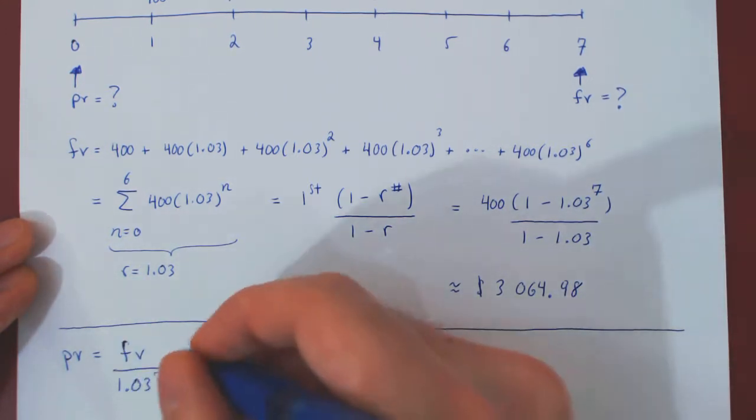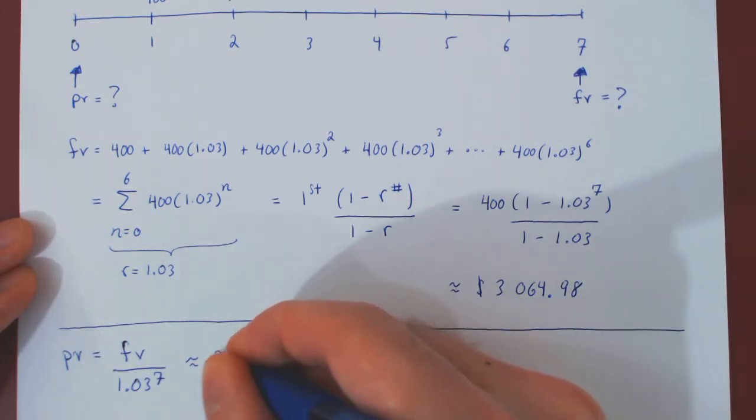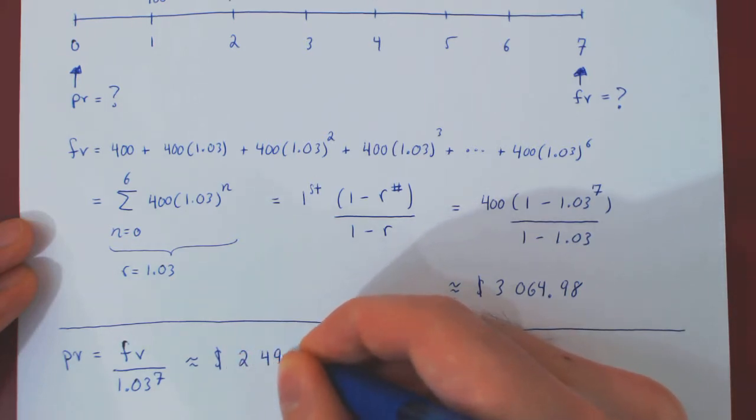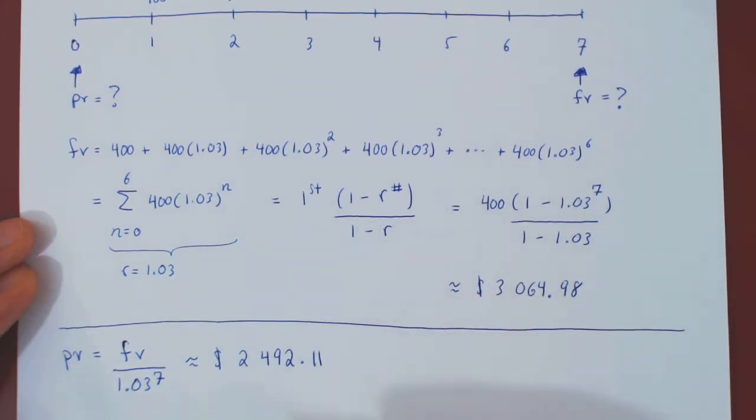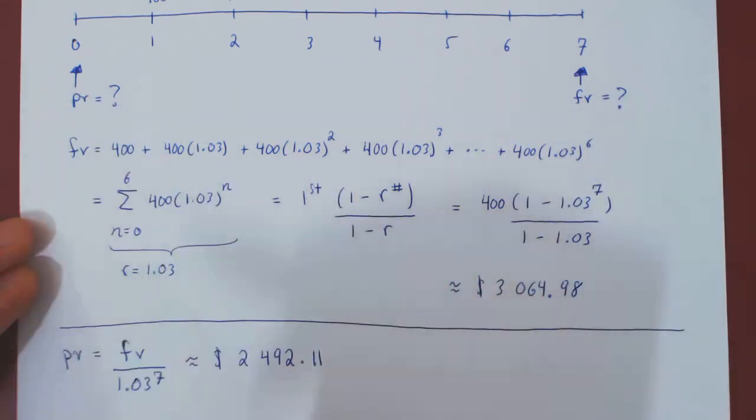And if you calculate this, you will obtain approximately $2,492 and 11 cents. So, that's one way, since we have just found the final value of the investments, to find the present value.